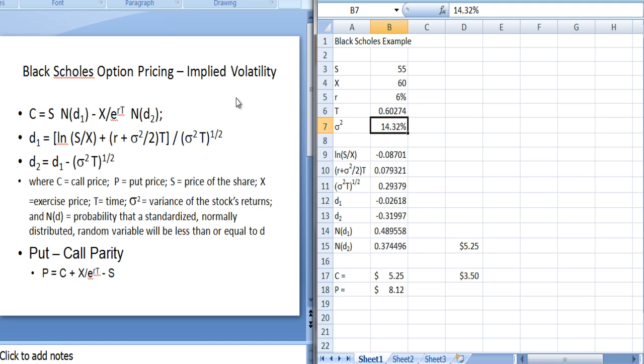And again, the idea of implied volatility is that we can figure out what the market thinks the variance is based on the price that the options trading for in the marketplace. And that can be useful information. Higher volatility means the option price should go up. Lower volatility means the option price can go down. And we can use this volatility because this is a current volatility. This is what the market thinks the stock returns variance is right now. Not what it was five years ago or 10 years ago or two years ago for that matter.